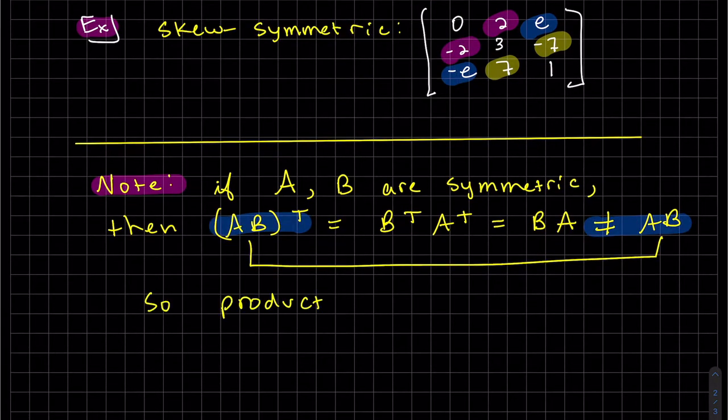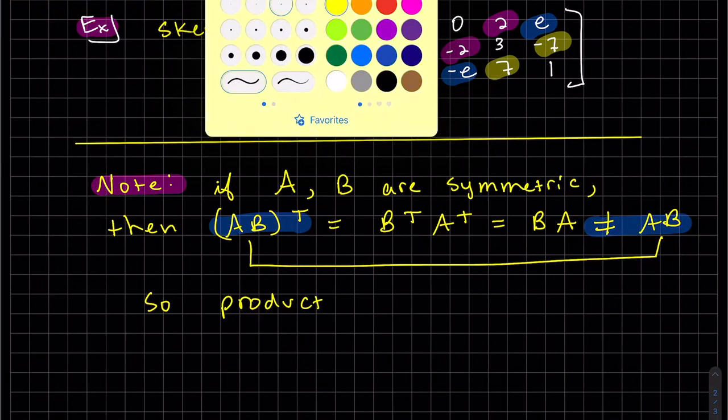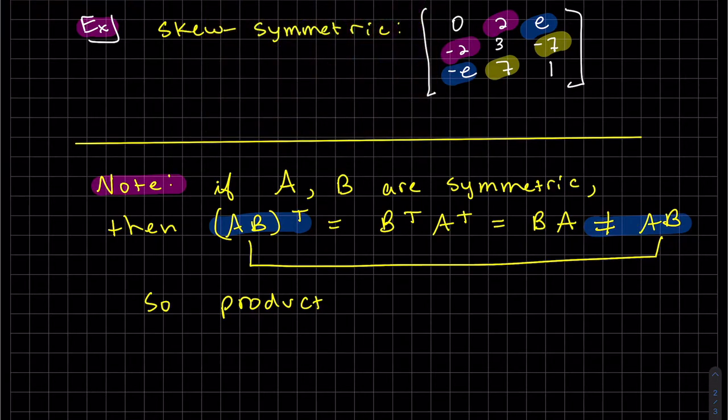So what we have here, we started off with AB to the power of T, quantity. We work it backwards. And this is symmetric, so it's B. This is symmetric, so it's A. But we know BA doesn't equal AB. So when you're looking at these, AB to the power of T, it doesn't necessarily equal AB. We don't know. So the product of the symmetric matrices are not necessarily symmetric.